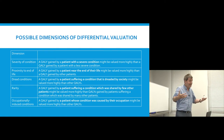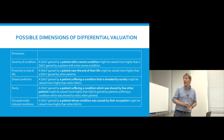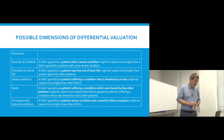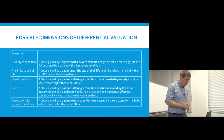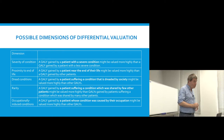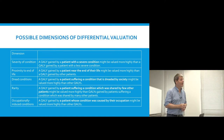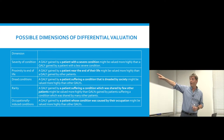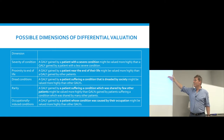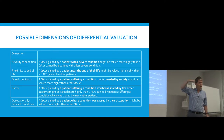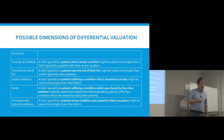Now, they're both gaining a QALY, but maybe we value the gain to one person more highly than another. Generally, most countries treat all QALYs pretty much equally. Recently, policy in Norway has changed to explicitly recognise that severity might be important. The way they've tried to implement it is by using a higher cost-effectiveness threshold when the patient has a particularly poor prognosis.